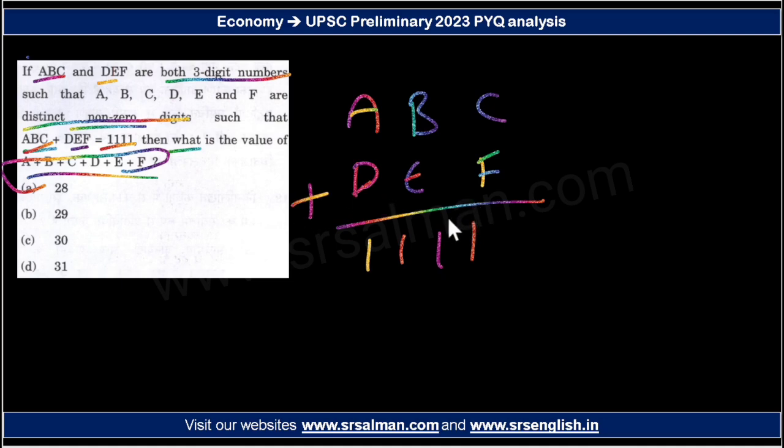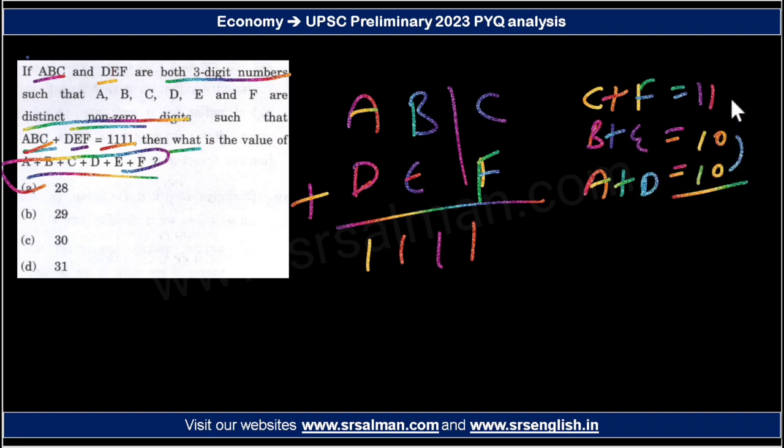So if you want to solve this equation, here is nothing. A plus B plus C plus D plus E plus F. So here is 31.